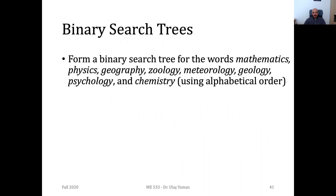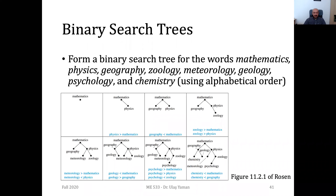Now we are going to form a binary search tree from the words — some science names like mathematics, physics, geography, zoology — using alphabetical order. We assume mathematics is the root. Then physics comes after mathematics alphabetically, so we put it on the right.